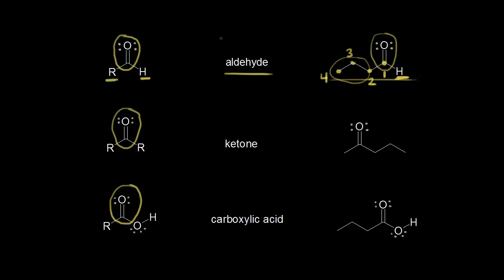So how do we name a four-carbon aldehyde? A four-carbon alkane is butane. An aldehyde has an -al ending, so if you see an -al ending, that indicates the presence of an aldehyde. We're going to lose the E from butane and add on -al. So the name of this molecule becomes butanal.